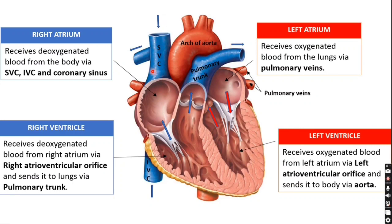To recap the basic circulation: the superior and inferior vena cava carry deoxygenated blood to the right atrium, then to the right ventricle, which pumps via the pulmonary trunk to the lungs. In the lungs, oxygen and carbon dioxide are exchanged. The oxygenated blood returns via pulmonary veins to the left atrium, then the left ventricle pumps it through the aorta to the whole body.